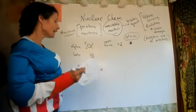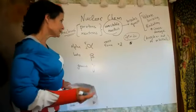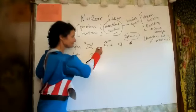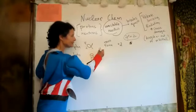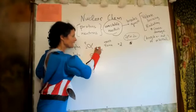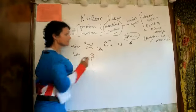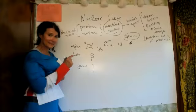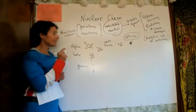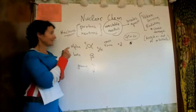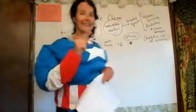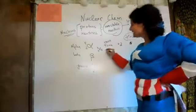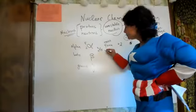An alternate symbol: the element with atomic number two is helium, so some books symbolize the alpha particle with a helium symbol. But alpha is the same as the helium nucleus — the difference is that helium has electrons, while alpha does not.